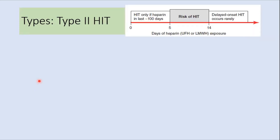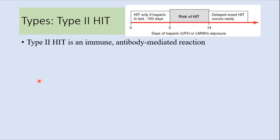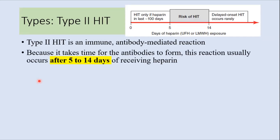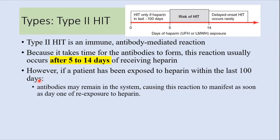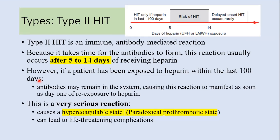Type 2 HIT is an immune antibody-mediated reaction and occurs after 5 to 14 days of receiving heparin, because it takes time for the antibodies to form. However, if the patient has been exposed to heparin within the last 100 days, antibodies may remain in the system, causing this reaction to manifest as early as day 1 of re-exposure. This is a very serious reaction because it causes a hypercoagulable state leading to multiple thromboses in various parts of the body, which is a common cause of mortality.